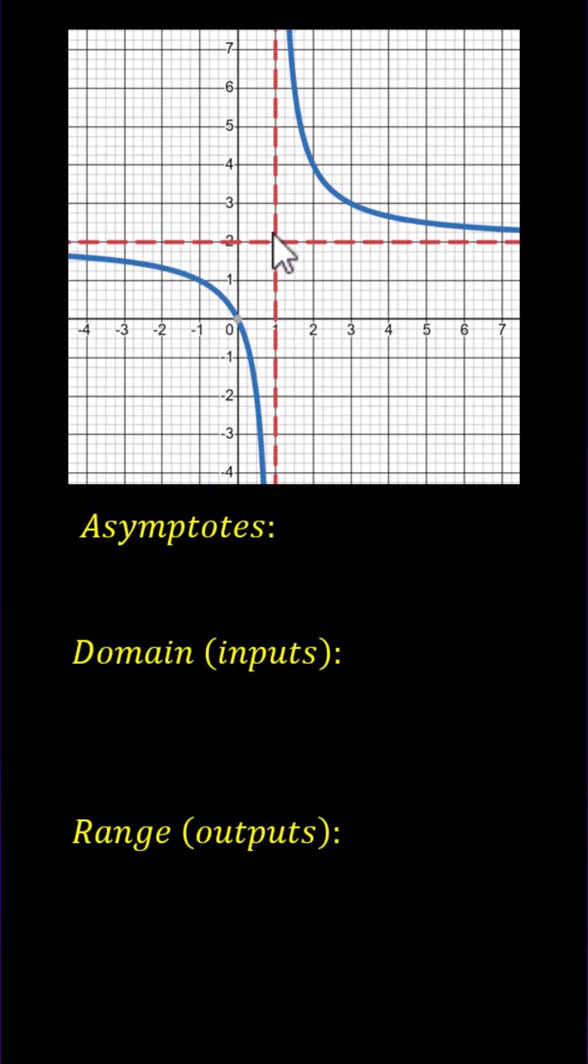A vertical asymptote is a vertical line that a graph approaches and never crosses. In this case, the rational function approaches this red vertical line, which is x equals 1. x equals 1 is a vertical asymptote.